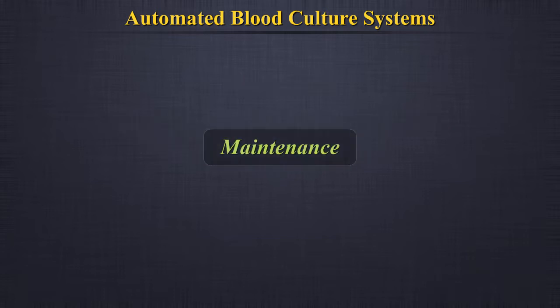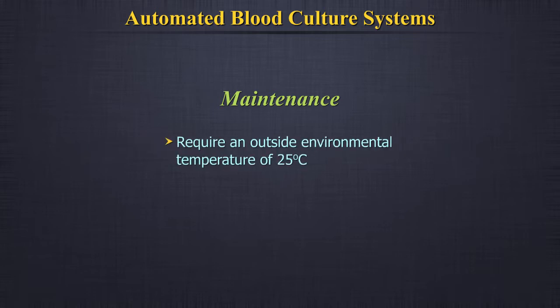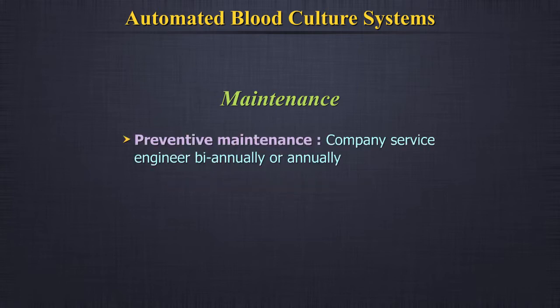Maintenance. Maintenance and calibration of automated blood culture platforms is strictly as per the manufacturer's instructions or operator manuals provided at the time of installation. Most of these systems require little maintenance from the user to provide reliable performance. All these instruments continuously work, require an outside environmental temperature of 25 degrees centigrade, and continuous UPS power supply. Apart from this, preventive maintenance is done by a company service engineer biannually or annually.